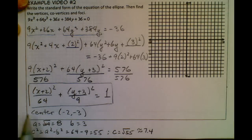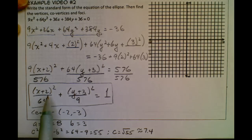And I know it's going to be horizontal, because a is always larger, so a is going to be under the x's. So since x goes left and right, I know my ellipse is going to go left and right.